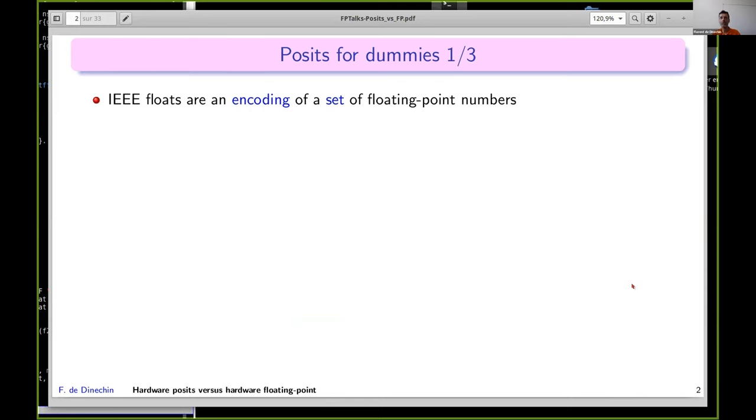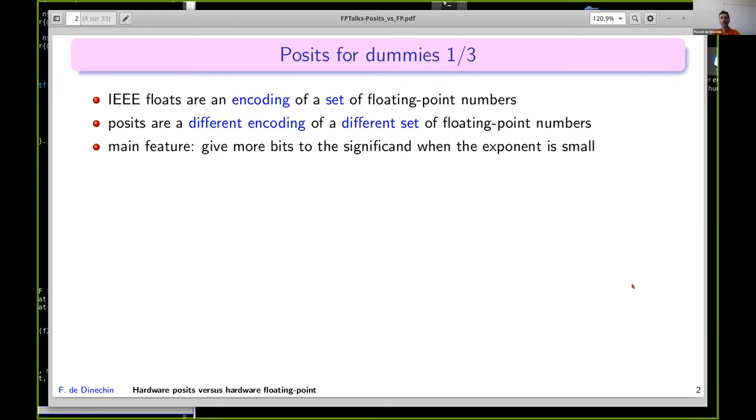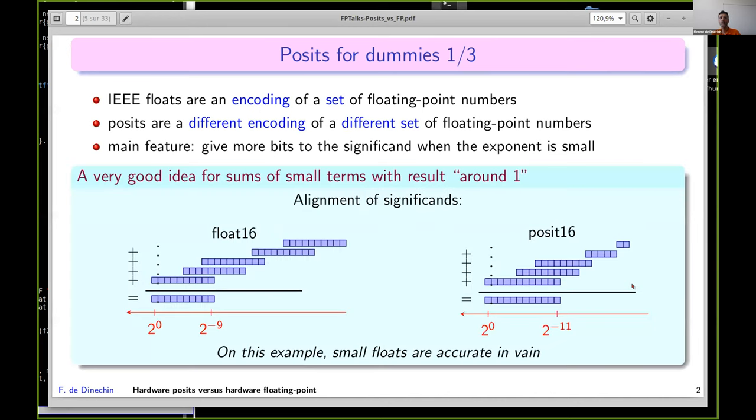First, I want to remind you that floats are an encoding of a set of floating-point numbers. There are two levels of description: you define a set of floating-point numbers, add exceptional numbers like infinities, then encode that. Posits are a different encoding of a different set. The main idea of posits is to give more bits to the significand when the exponent is small. This is definitely a very good idea when you do summation, where the result has a small exponent.